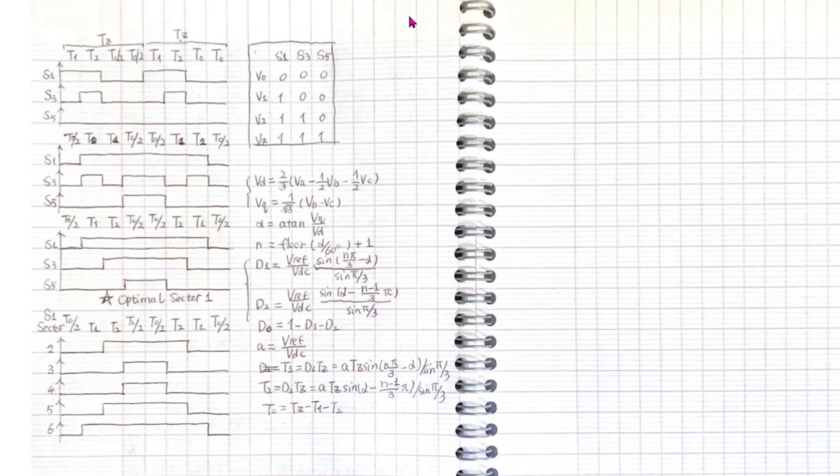There are a few rules. First, the switching sequence is made symmetrical in order to minimize switching losses. Second, both V0 and V7 are used to smoothly take over the previous vector with least switching need.